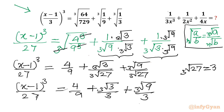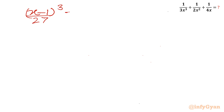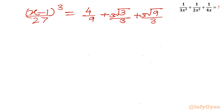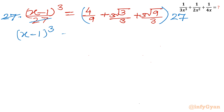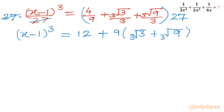Now I will multiply both sides by 27. So x minus 1 whole cube over 27 equals 4 over 9 plus cube root 3 over 3 plus cube root 9 over 3. Multiplying both sides by 27, we can cancel 27 and 27. So x minus 1 whole cube in the LHS. In RHS: 9 times 3 gives 12, and 9 is common from the last two terms, giving the bracket cube root 3 plus cube root 9.